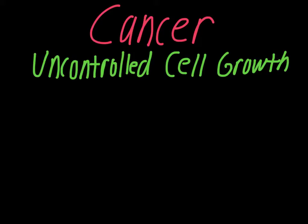This video is focused on cancer, which can ultimately be boiled down to the phrase seen up there in green: it's uncontrolled cell growth. Everything we've been talking about this chapter assumes that the process of cell division is going correctly, but there are problems that can happen with cell division that can lead to cancerous cells. Cancer is basically cell division out of control.